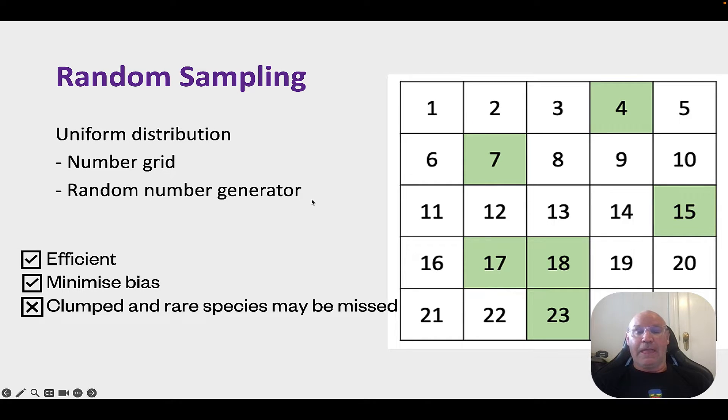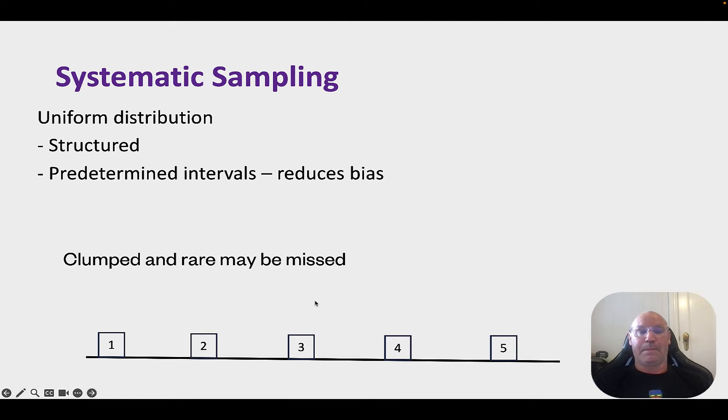Random sampling is very efficient. Trouble, though, is that if we have clumped and rare species, well, they may well be missed. Now, systematic sampling, this is like when we've got a gradient and it's got to be a very structuredness determined ahead of time with predetermined intervals. But where, for example, it might be every five meters along this transect line, we're going to put down our quadrat and we're going to measure, collect our data at that point. Again, it's quite efficient, minimizing bias, but again, clumped and rare species may be missed.